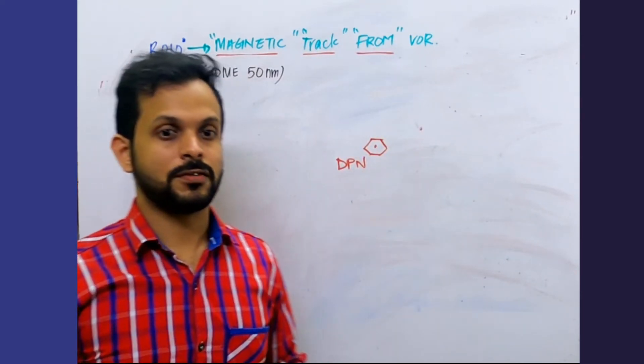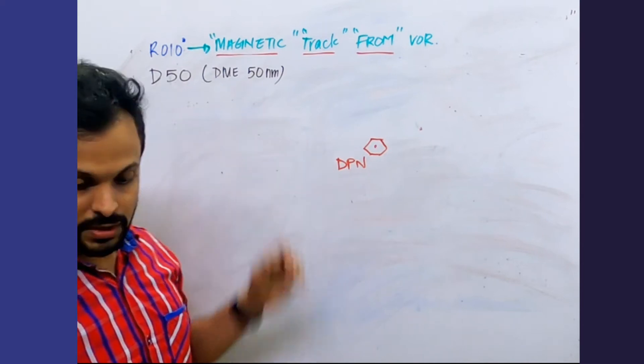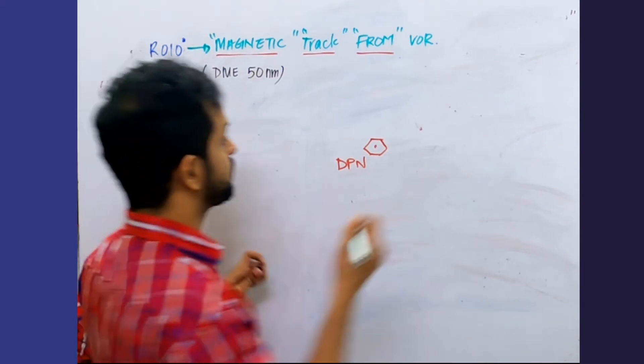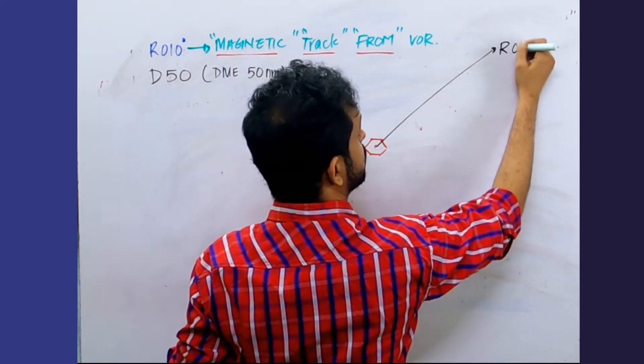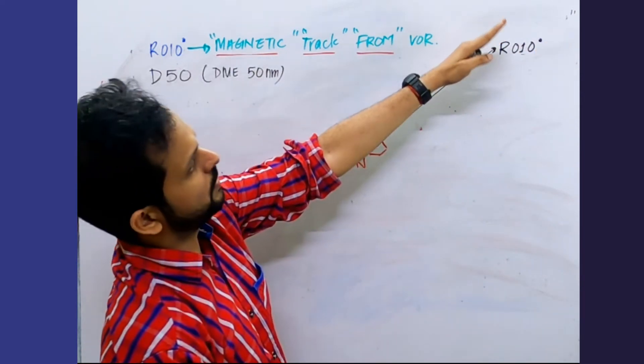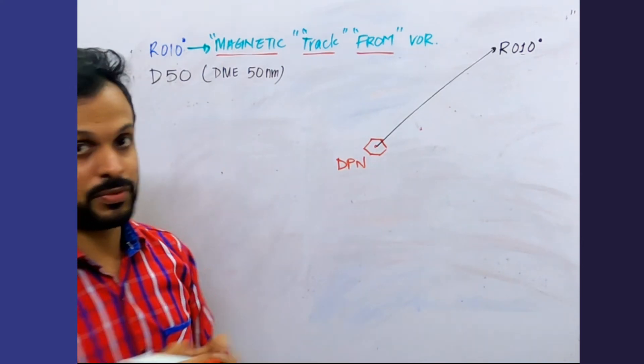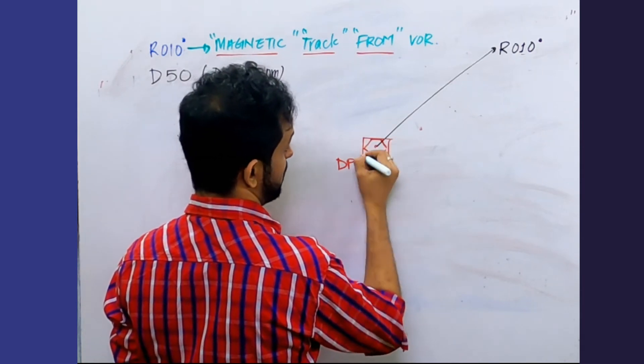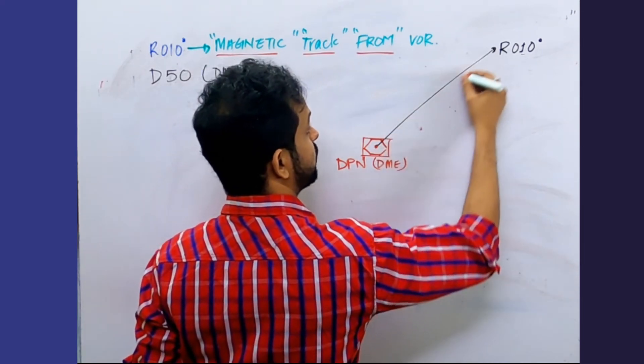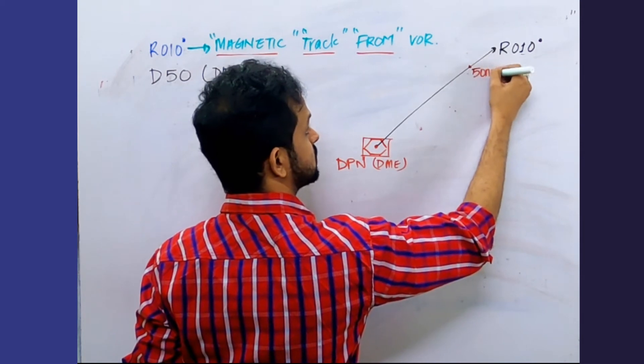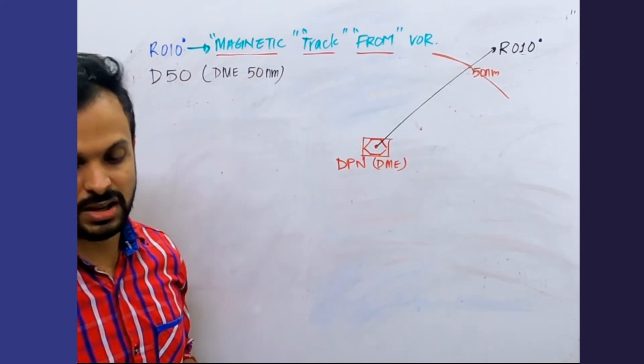It's more like the QDR for the NDB systems. So everything from there is now the same. Let me draw this particular radial, the radial of 010. I'm drawing it a bit off just to make it better. The aircraft is at a distance of 50 nautical miles from the VOR. We have the DME association here, VOR DME. You have the 50 nautical mile DME arc, and the aircraft is straight there.